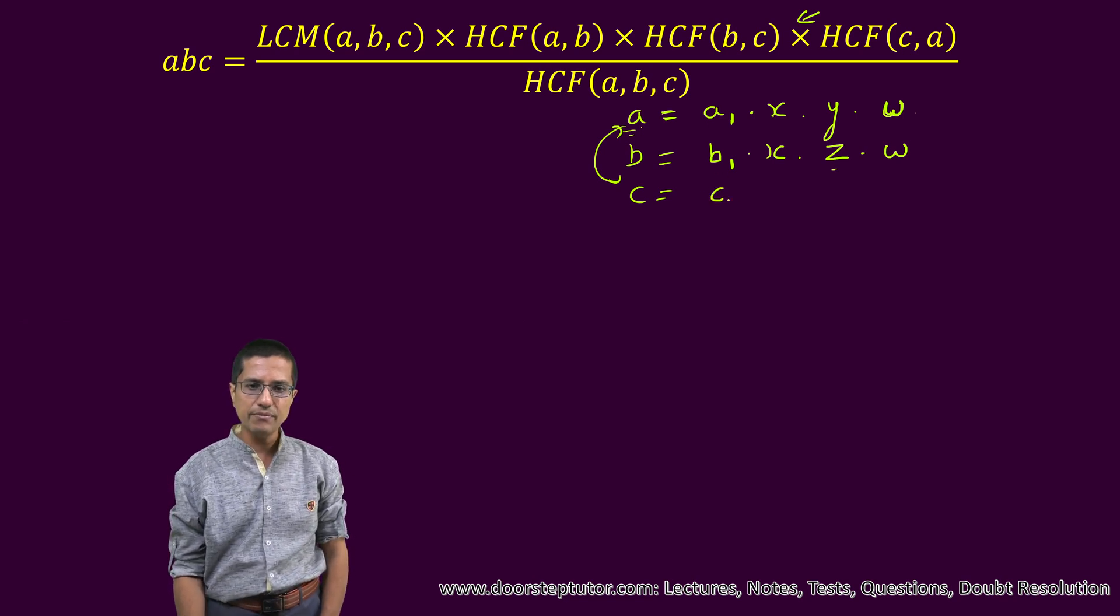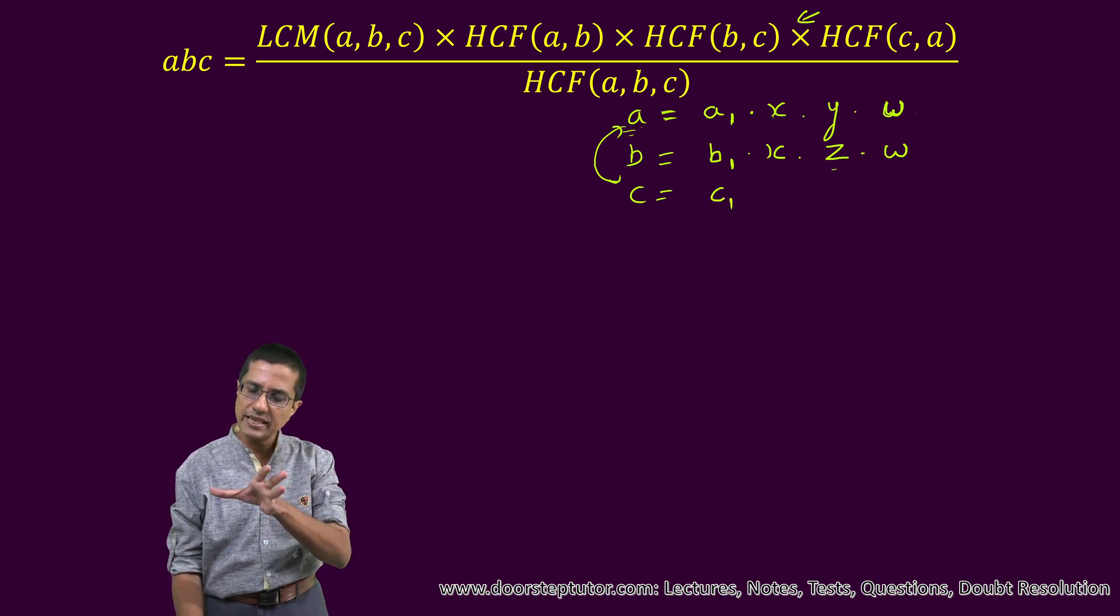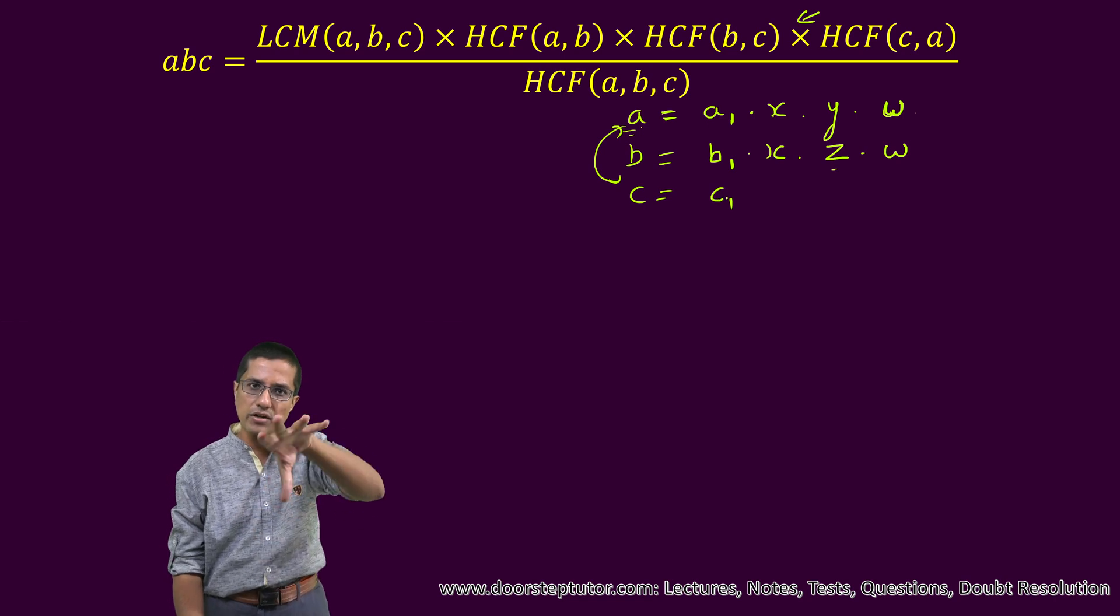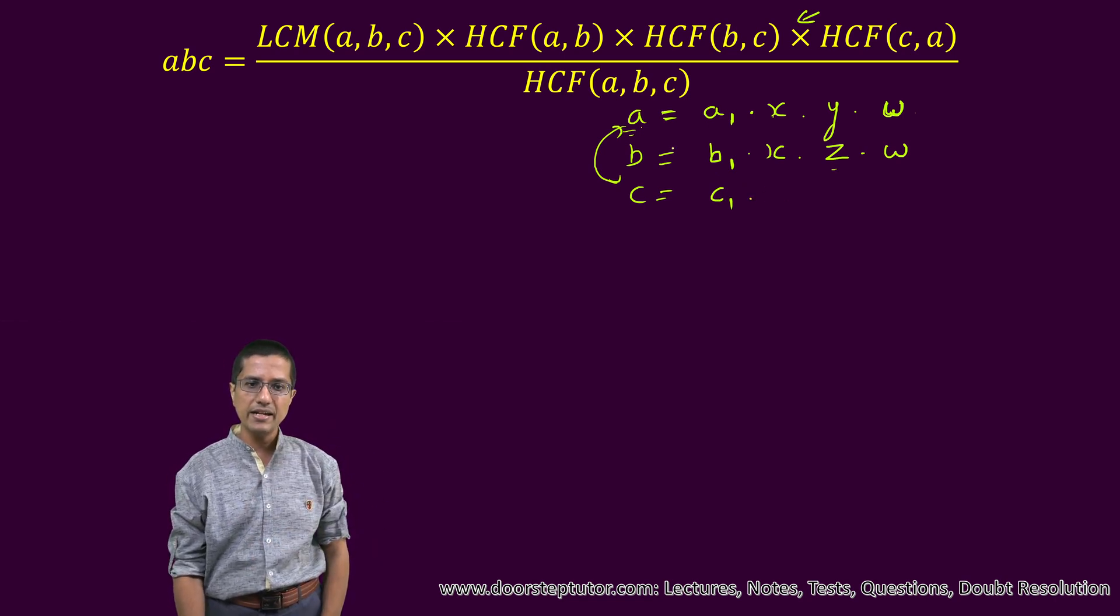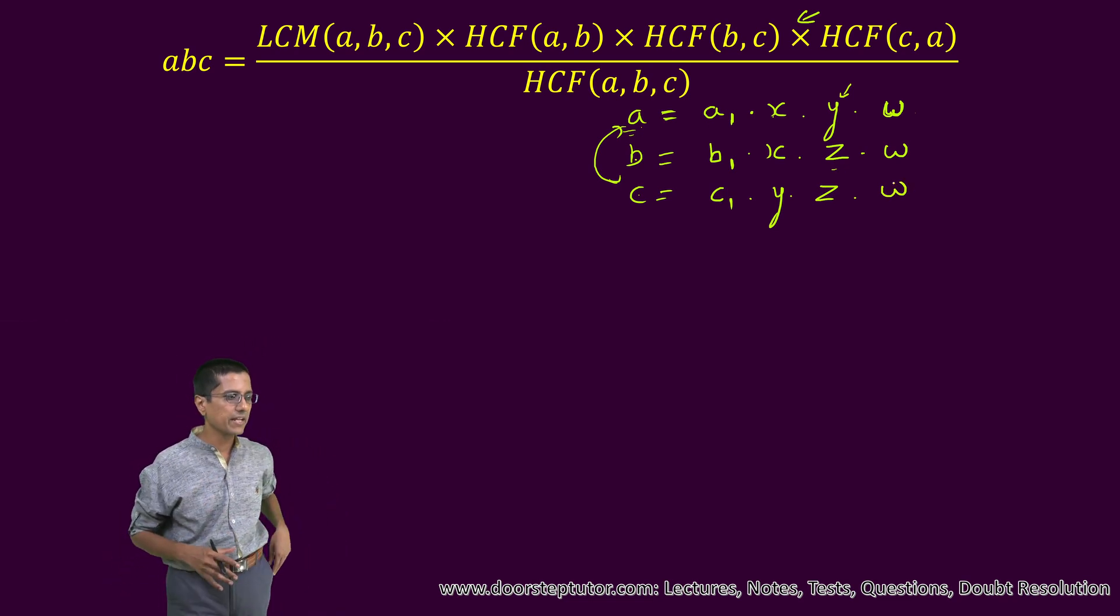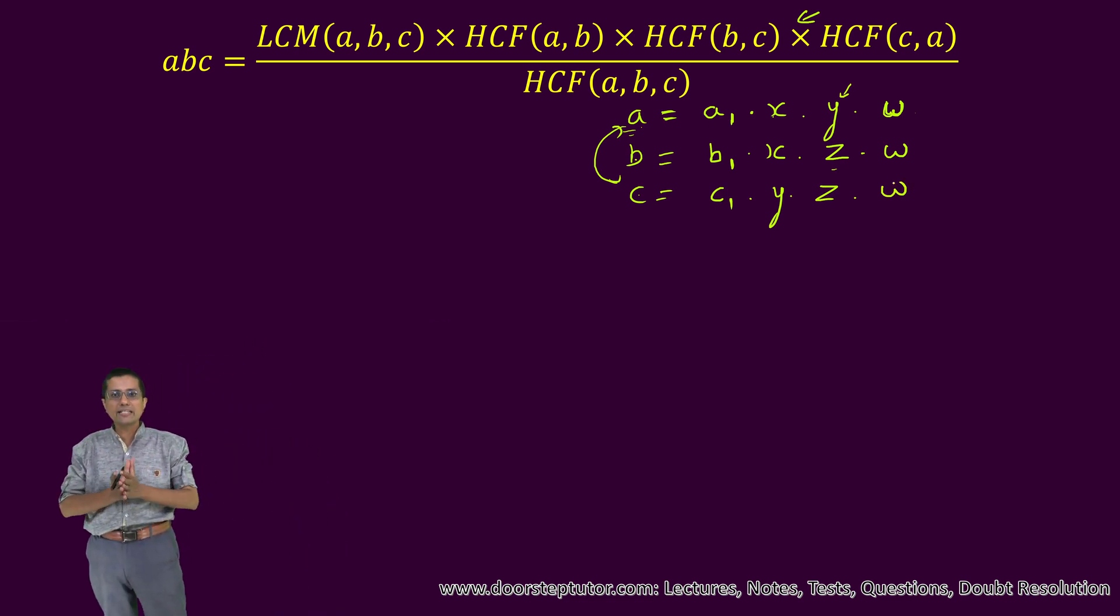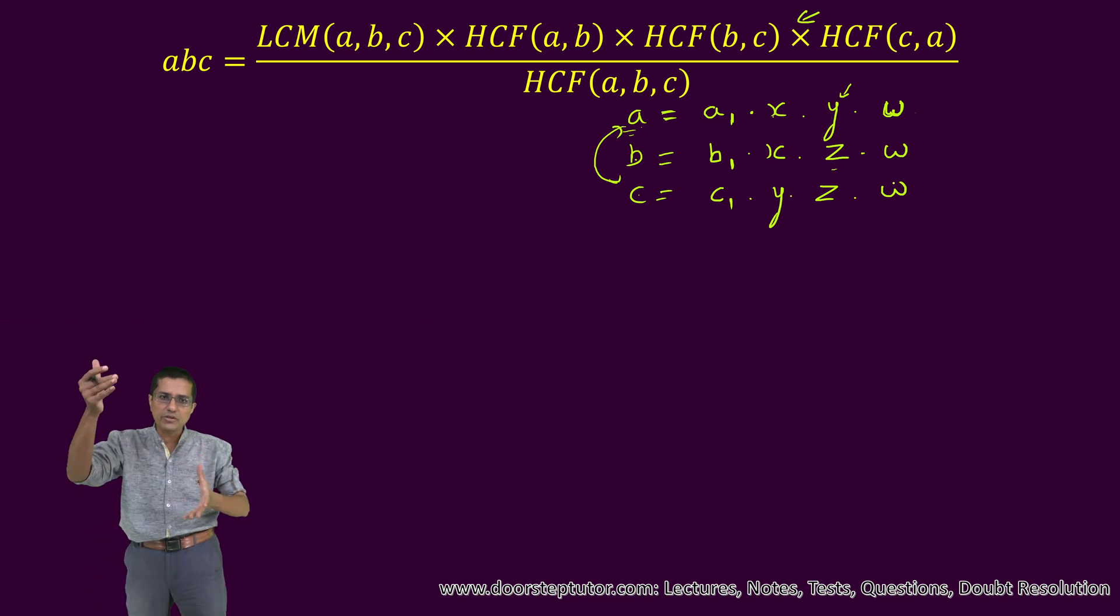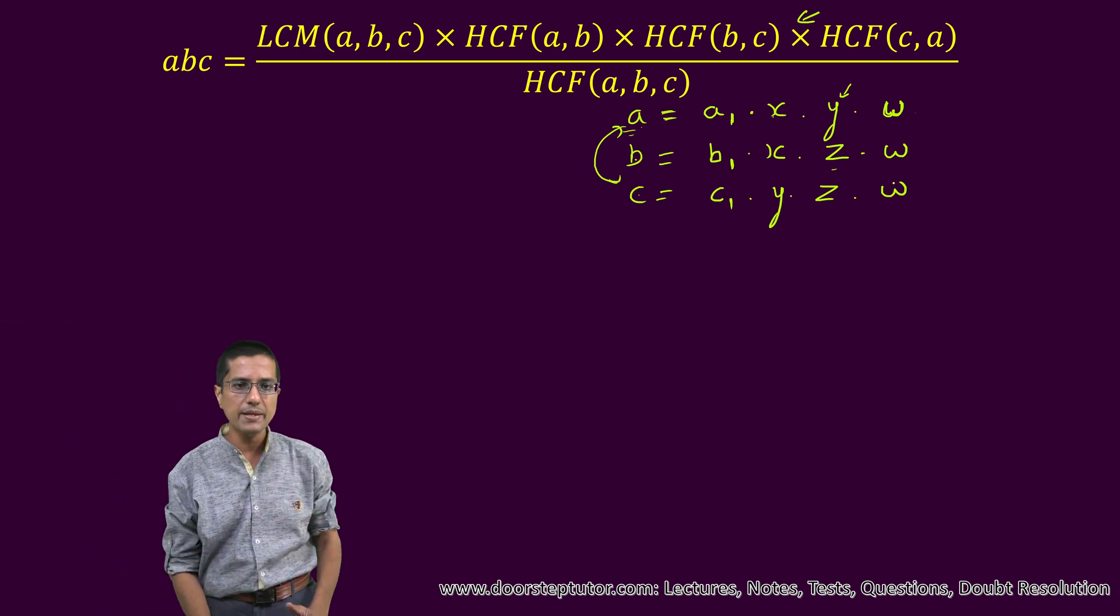What about C? C has some factors whose product is C1, and this C1 is unique to C - they are not found in A and B. There are factors between A and C whose product we've already said is Y. There are some factors common between B and C whose product we've already said is Z. And of course, W will appear here also because W is the product of factors which are common to all A, B and C.